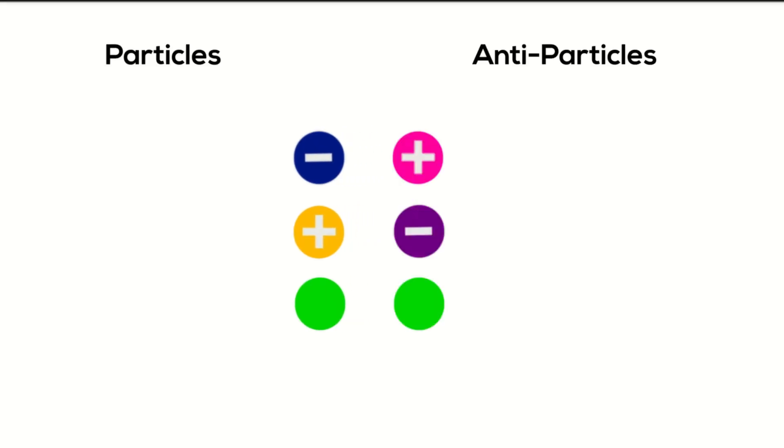Each of these particles has an equal and opposite antiparticle making the antimatter. The antiparticles have the same properties as their equivalent particles, but differ in electric charge.